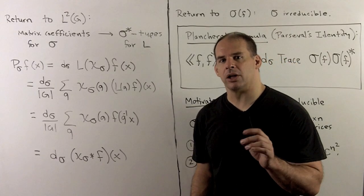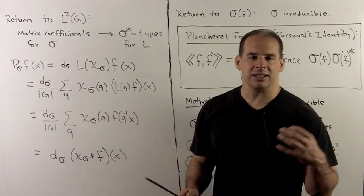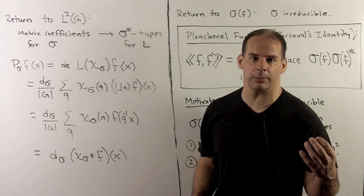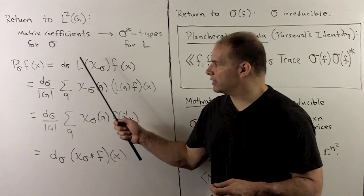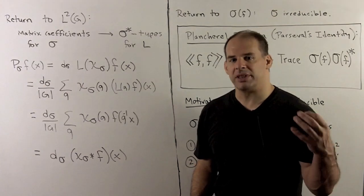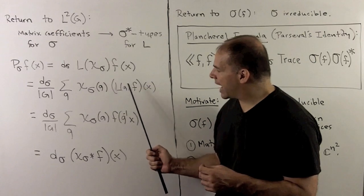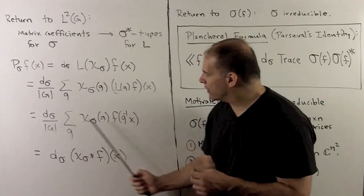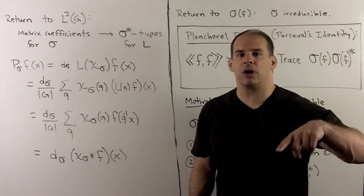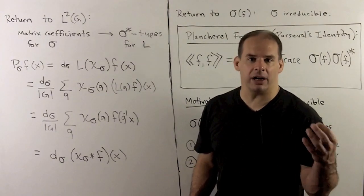Let's apply our projection formula to L2(G) as a representation space. If we want to project onto the matrix coefficient space for type sigma, that is the same as picking out the sigma-star types under the left action, where sigma-star is the dual representation. Writing down our formula with the dimension and the left action, we have the character of sigma-star complex conjugate, which equals the character of sigma, applied to F. Expanding, when the left action goes inside g becomes g-inverse, giving the definition of convolution times the dimension. So the projection onto one of these matrix coefficient blocks is just convolution with the character multiplied by the dimension. This agrees with our formula in the finite abelian case.